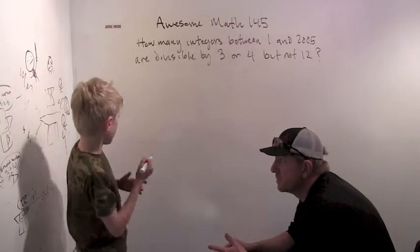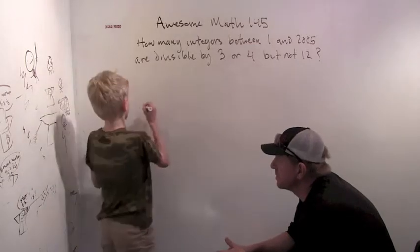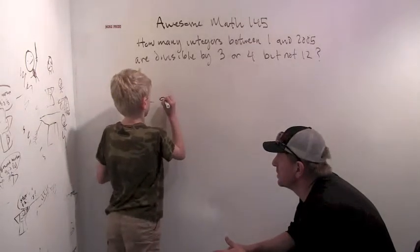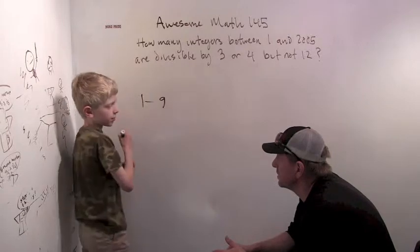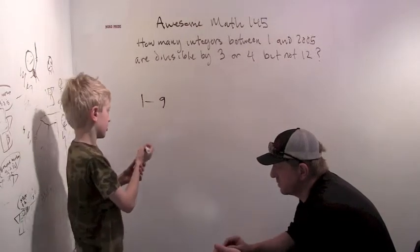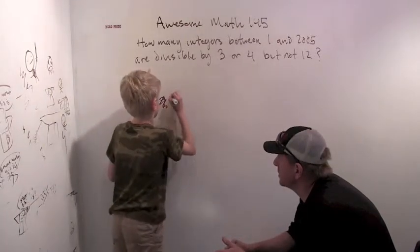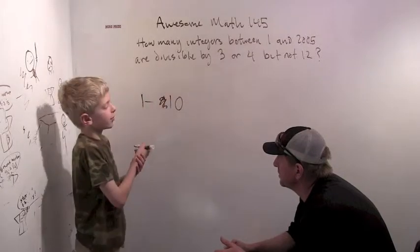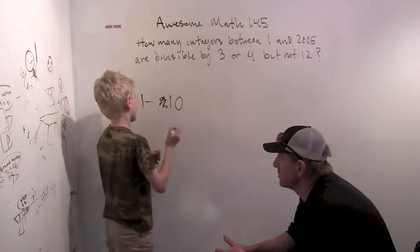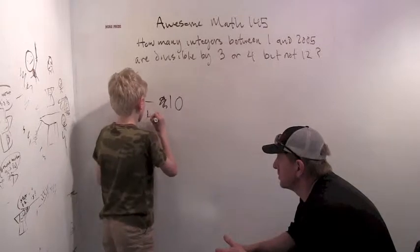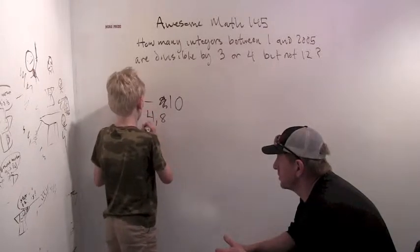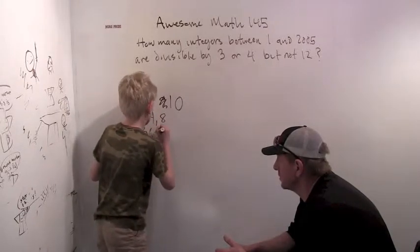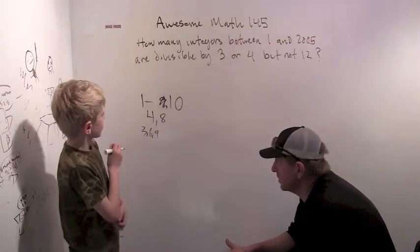Well, if we lower it to 10, if we do it from 1 to 10, there would be 5 numbers. There would be 4 and 8, 3, 6, and 9. Okay, interesting.